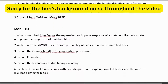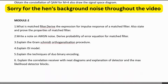In Module 2, very important topics are: define matched filter, derivation of the impulse response of a matched filter, and state and prove the properties of a matched filter. Write a note on AWGN (Additive White Gaussian Noise). Derive the probability of error equation for a matched filter.